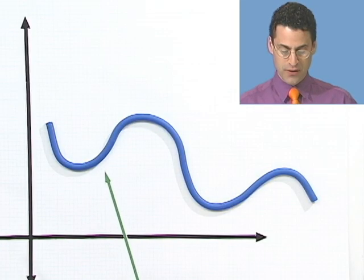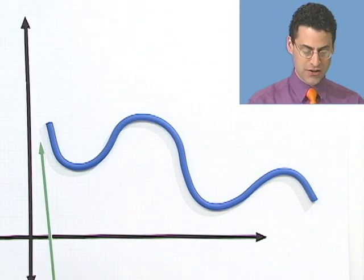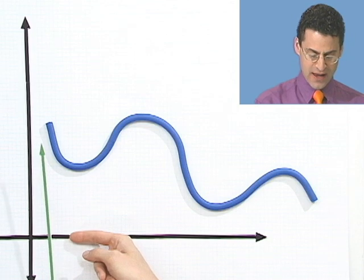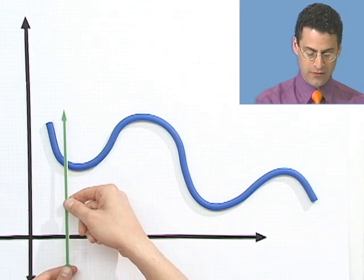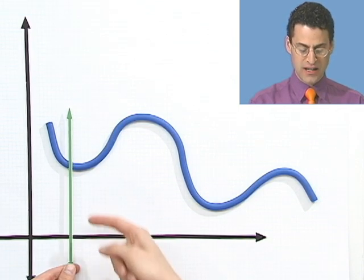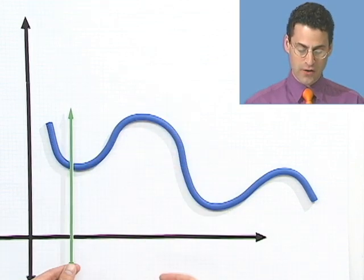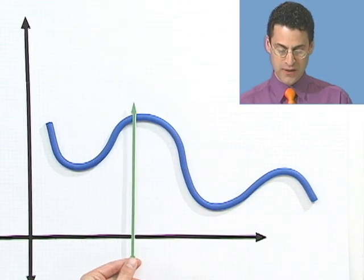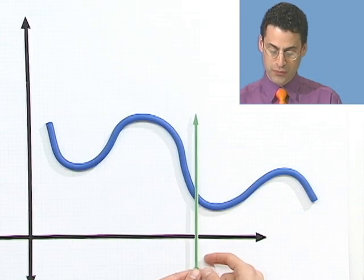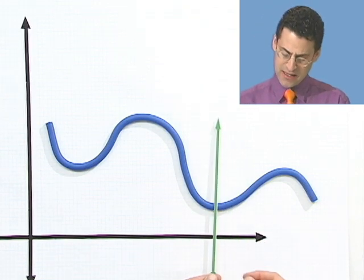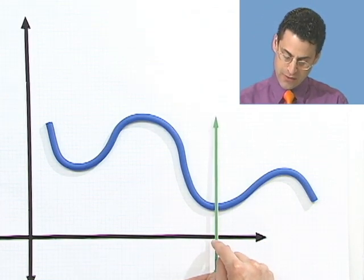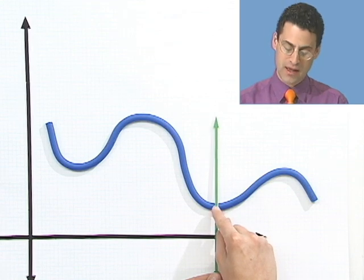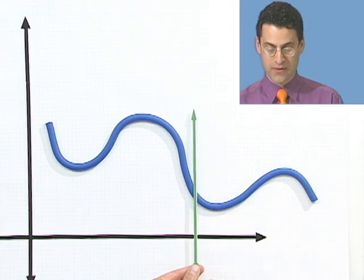We've also seen how you can recognize whether something's a function or not by just looking at its picture. We could give it the vertical line test and make sure that for every value of x, there's at most one value of y. We use the vertical line test to see if the curve only hits the vertical line at at most one point. For this x value, there's only one y value, so it's a function of x.